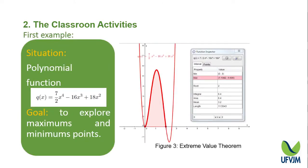This example had an interesting discussion because at this time many students still had great difficulty constructing and understanding elementary function graphs. After a discussion of around 30 minutes, the learning goal was reached when students were able to find the maximum and minimum points of the polynomial function and conclude why the derivative is zero at these points, which led them to better understand Fermat's theorem for stationary points.